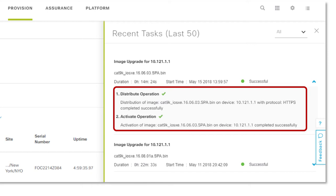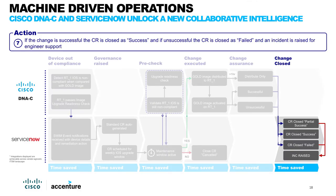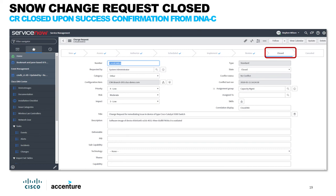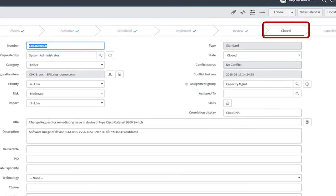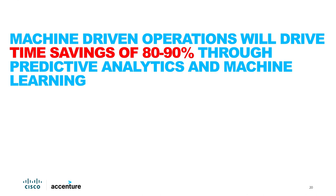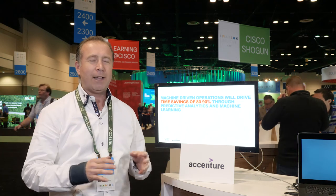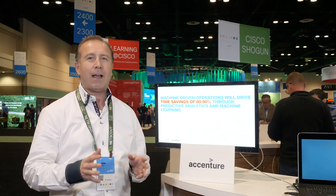As part of the final step, DNA Center has sent a message to ServiceNow indicating that the change is successful, the cutover has happened, the device has successfully rebooted, and it is now in compliance. ServiceNow can go in and mark the change as successfully executed and closed. We estimate for routine tasks like IOS upgrades, we're going to save between 80 and 90 percent of those activities — across thousands of devices that large enterprises have, that's tens of thousands of hours saved every year.